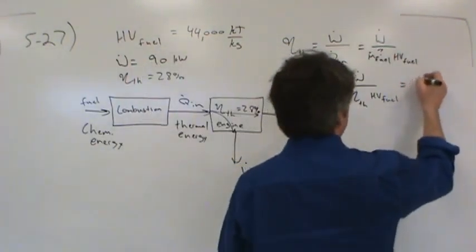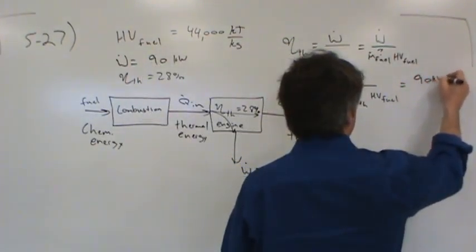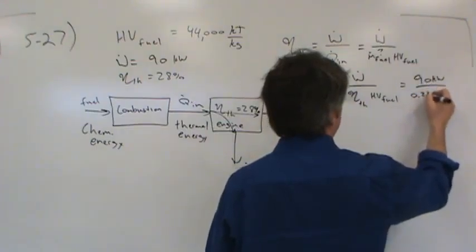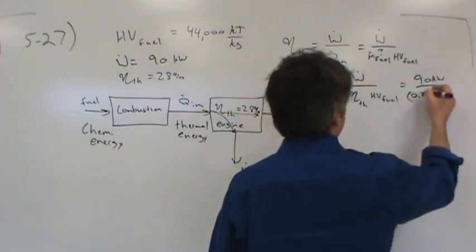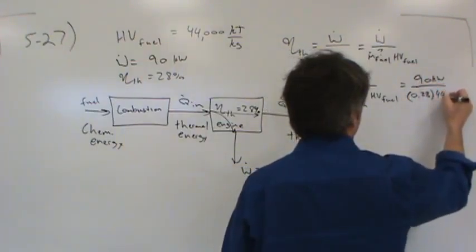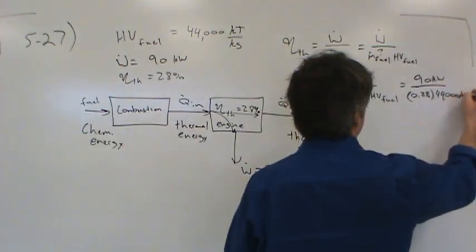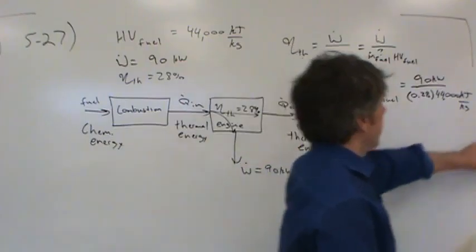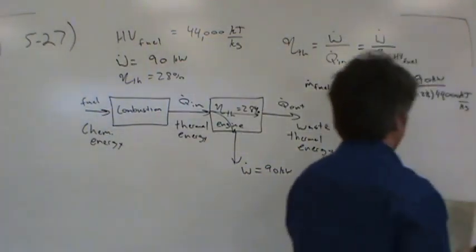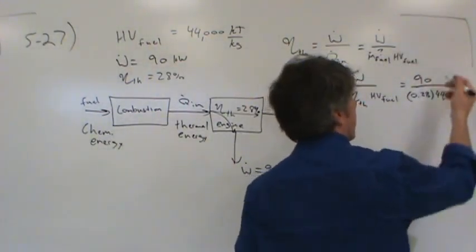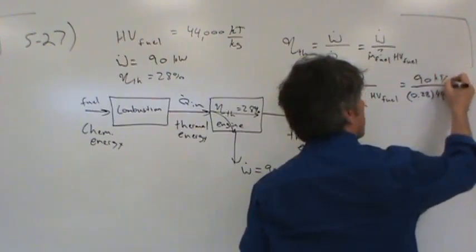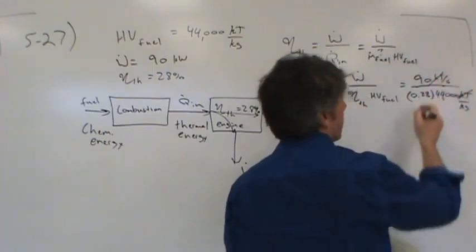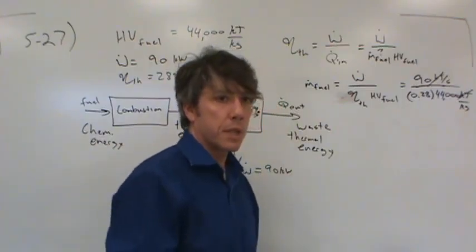Well, the power output of the engine is 90 kilowatts. The efficiency is 28%, and the heating value of the fuel is 44,000 kilojoules per kilogram. Now, it may not look like this is going to come out very well, but it will, because a kilowatt is just a kilojoule per second. See how the kilojoules go away, and we end up with kilograms per second?